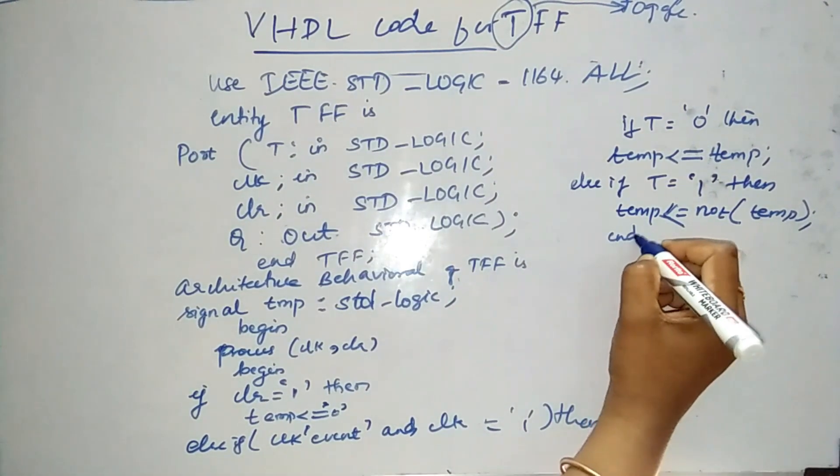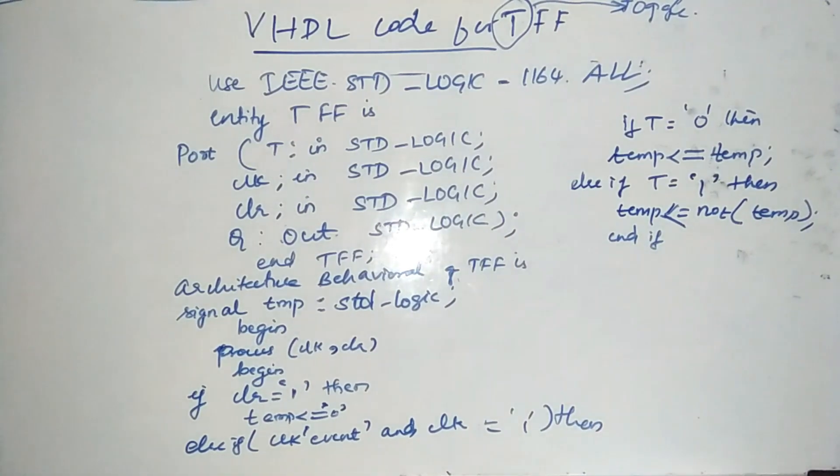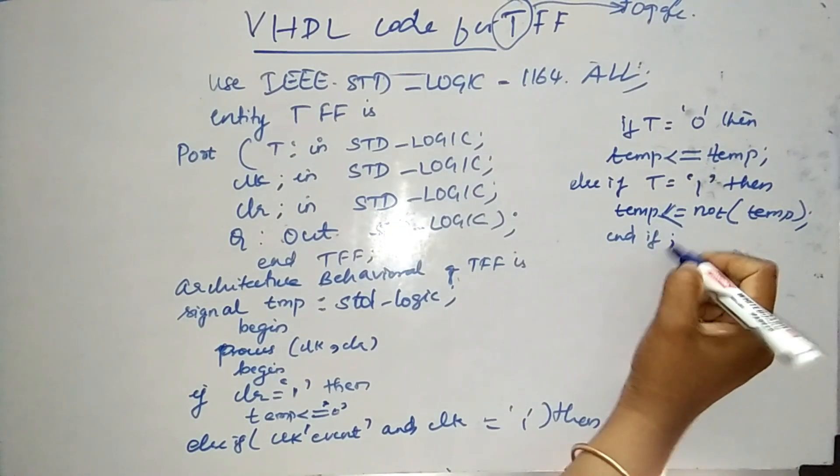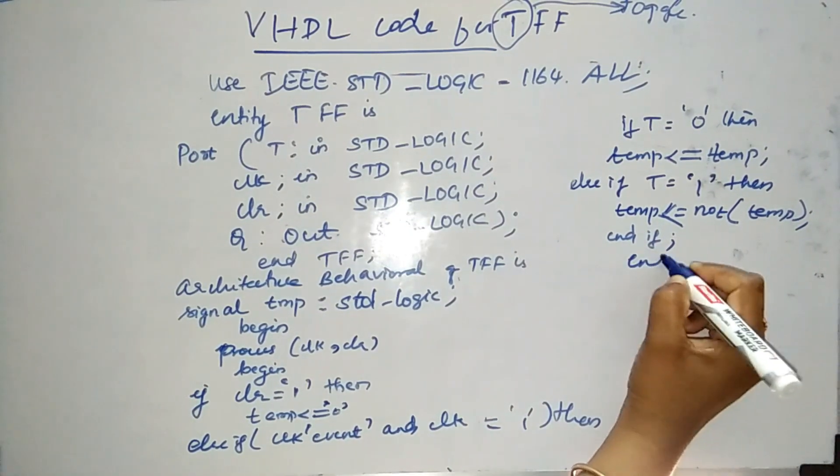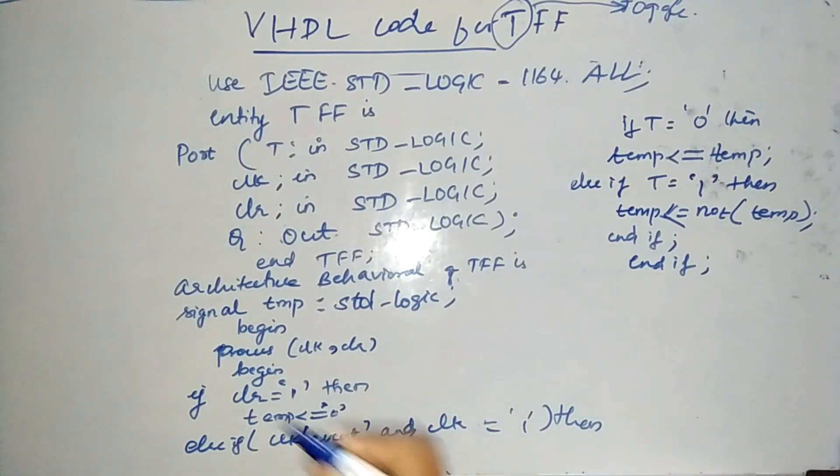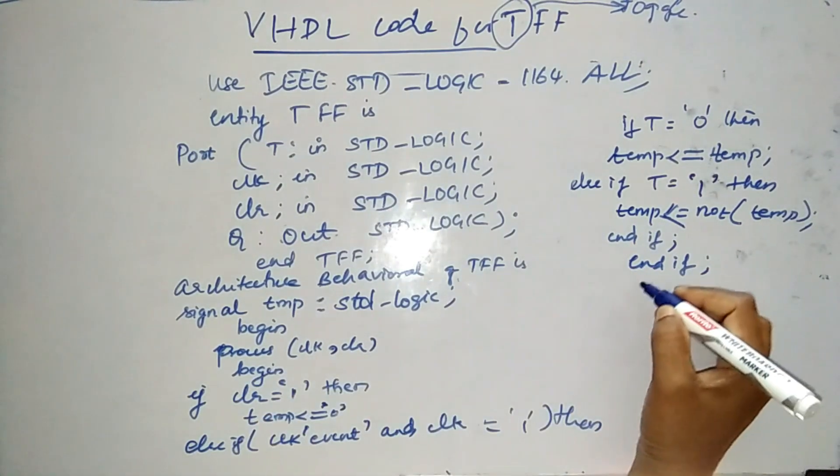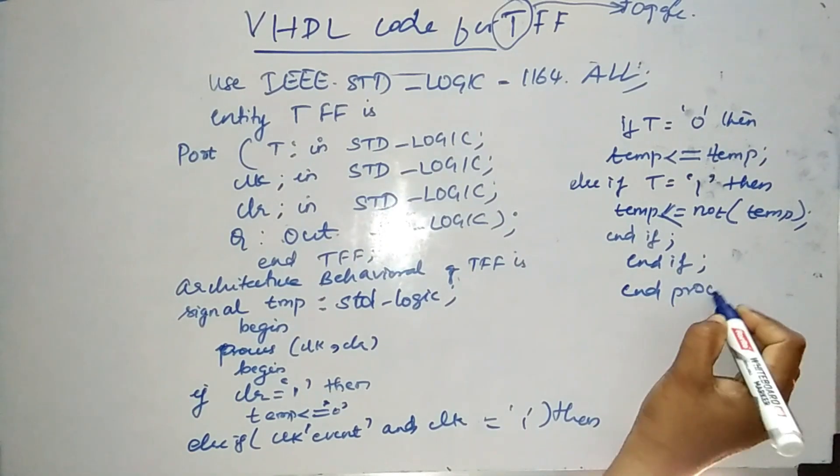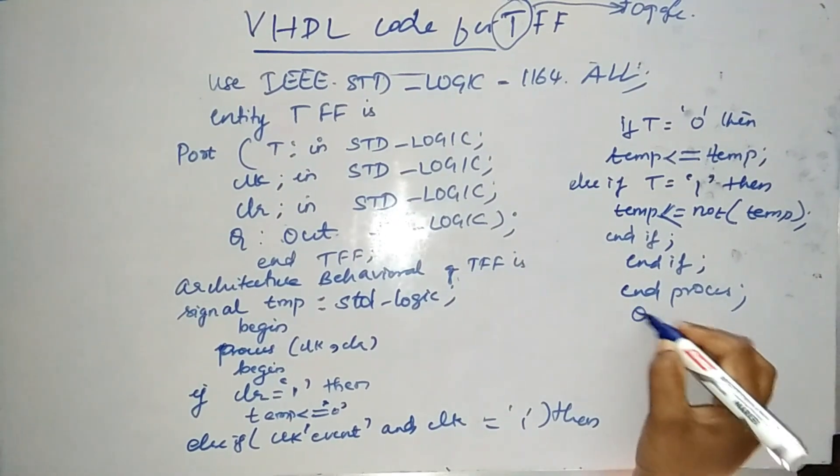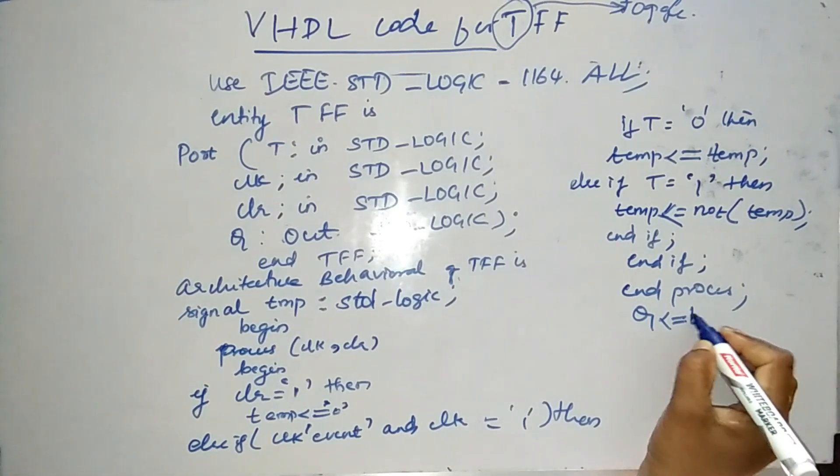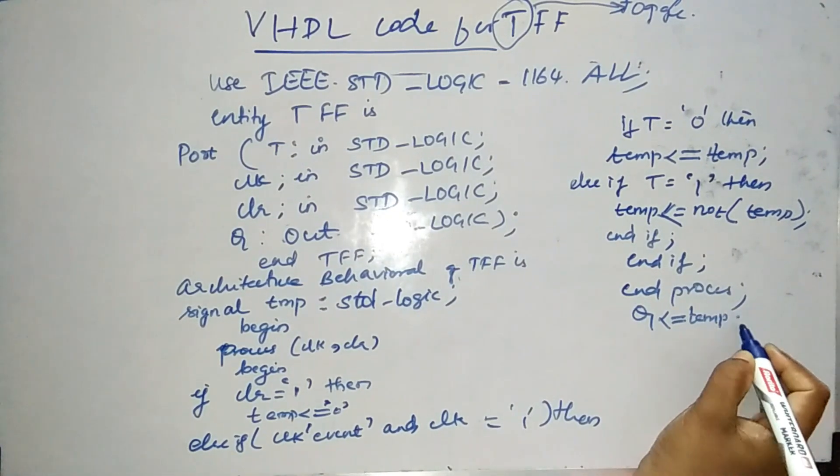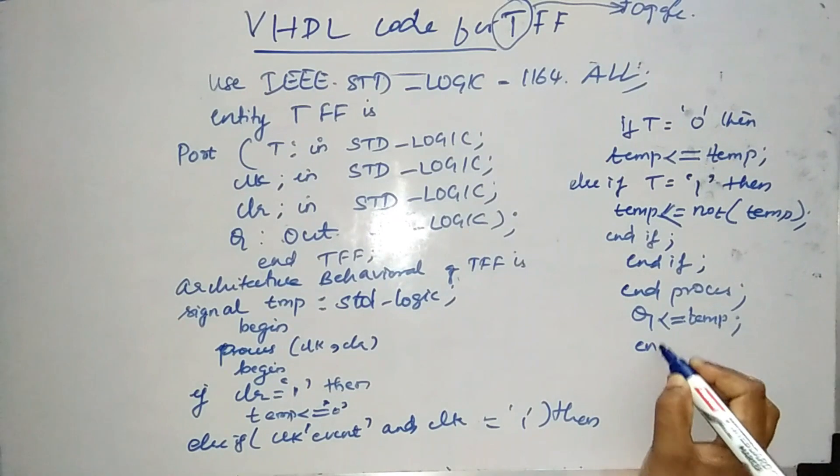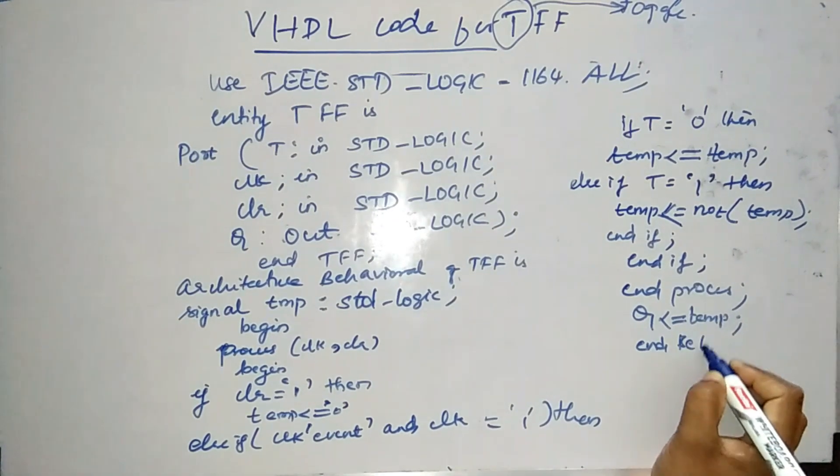So that will be the end of the coding. Wherever I have started the if statement, I have to end. So I have used end if, and one other end if, to wherever I begin the end if, I am closing it. Then I am ending the process, and finally the output signal, which is equal to my temp signal. And that ends my end behavioral.